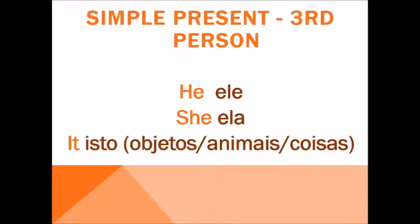Now let's remember who is the third person within Simple Present. Within Simple Present, we have the third person singular. Who are they? He, she, and it. He is used to say 'ele', she for 'ela', and it for objects, animals, and things.